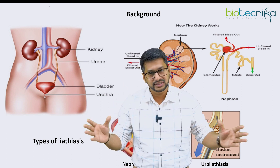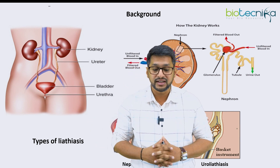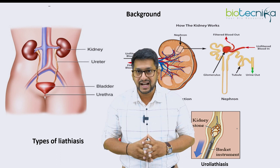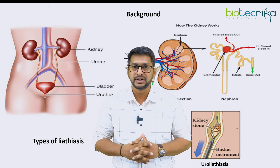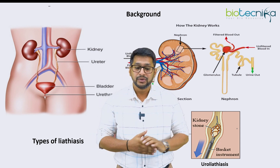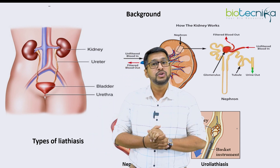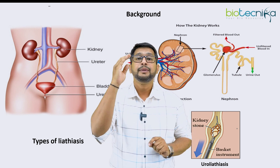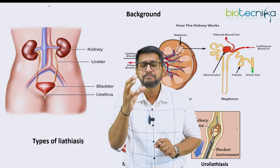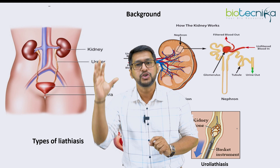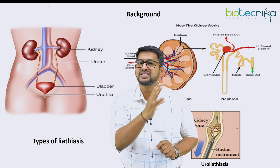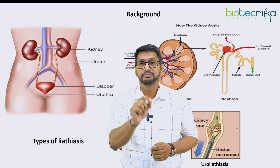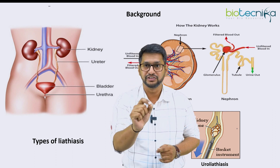The first component is the kidney. The second component is the ureter. The third component is the bladder. And the fourth component is the urethra. The kidney has a very important structural and functional unit, and these structural and functional units of the kidney are called nephrons.